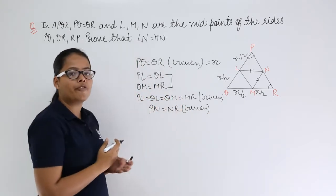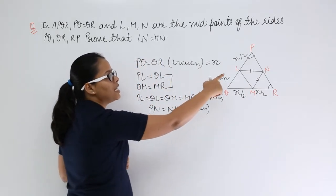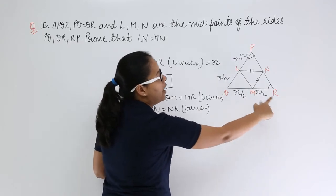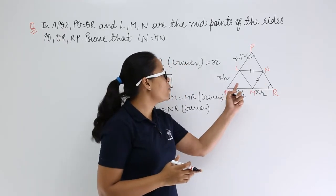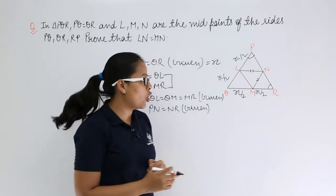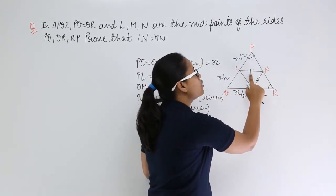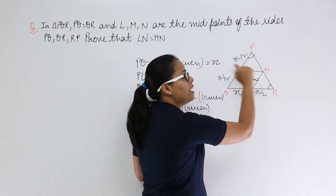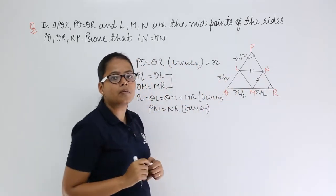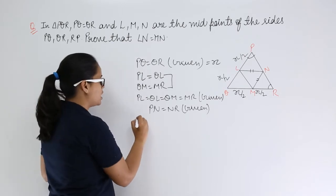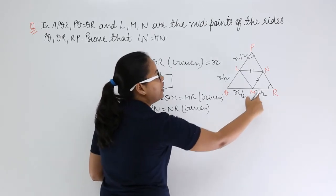From all these given facts, you need to prove that LN equals MN. Let's consider triangle PLN and triangle MRN. You might wonder why these two triangles — it's because LN is a side of triangle PLN and MN is a side of triangle MRN. That's why we consider these two triangles.